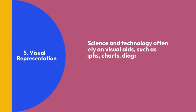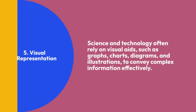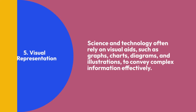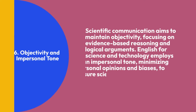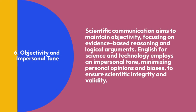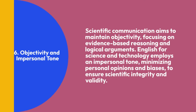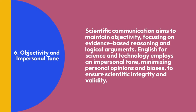Fifth, Visual Representation: Science and technology often rely on visual aids such as graphs, charts, diagrams, and illustrations to convey complex information effectively. Sixth, Objectivity and Impersonal Tone: Scientific communication aims to maintain objectivity, focusing on evidence-based reasoning and logical arguments. English for science and technology employs an impersonal tone, minimizing personal opinions and biases, to ensure scientific integrity and validity.